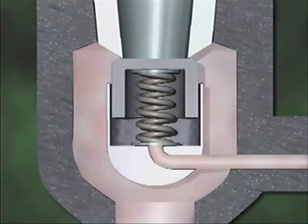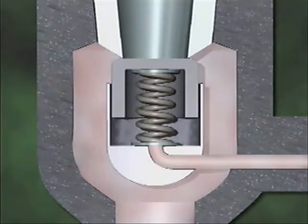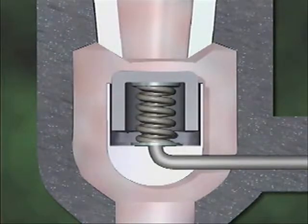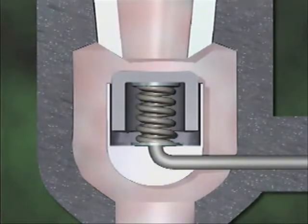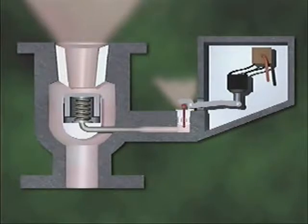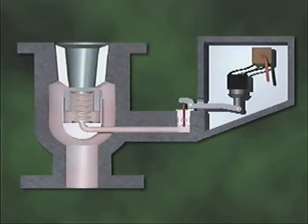The excess pressure relieved by the pilot valve comes from below the disc in the main valve. The amount of pressure the pilot valve is capable of relieving is greater than the amount that could leak between the disc and the disc guide. When this pressure is relieved, the only pressure remaining on the disc is the pressure above it. With no counterbalancing pressure below the disc, the pressure above easily overcomes the spring tension, so the valve opens to release system fluid through the outlet above the disc. When system pressure returns to normal, the pilot valve closes, pressure builds up again below the main valve disc, and helps the spring hold the disc closed.